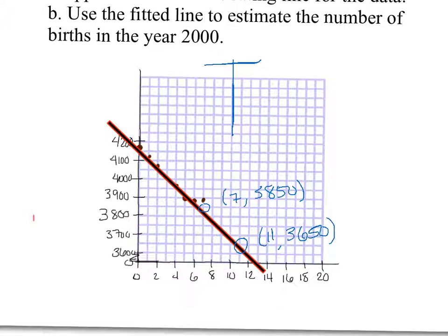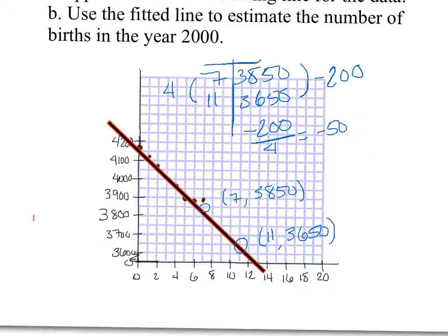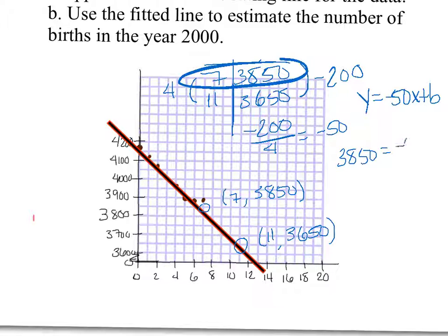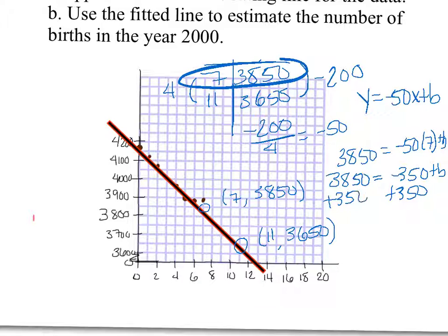So now I need to find the equation of this line. So we'll set up our table like we normally do. We have 7, 3850. And 11, 3650. Here it's going down by 200. Over here it's going up by 4. So you have negative 200 over 4, which would be negative 50. So there's my slope. Y equals negative 50 X plus B. And then I pick a temporary solution. Let's just pick the top one. So I've got 3850 in for Y. And negative 50 times 7 in for X plus B. Let's see. We have 3850 equals negative 350 plus B. Add 350. And let's see. We've got 4200 it looks like. Hopefully I'm right. If not, you can fix that. So now we have our equation. Y equals negative 50X plus 4200.